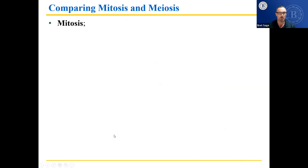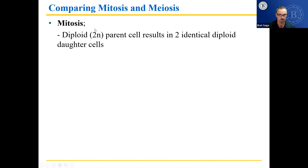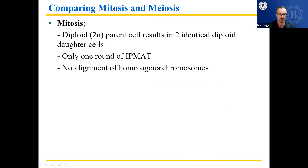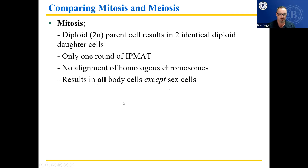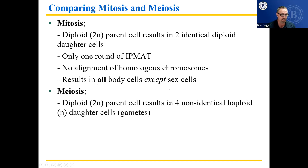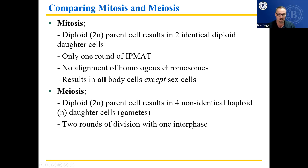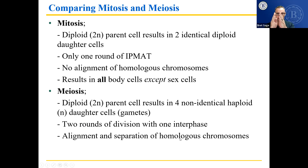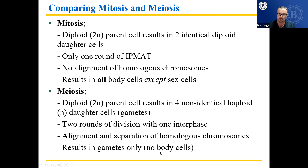Looking at the comparison notes: Mitosis — a diploid parent cell results in two identical diploid daughter cells. There's only one round of interphase, prophase, metaphase, anaphase, telophase. There's no alignment of homologous chromosomes in mitosis. It results in all body cells except sex cells. In meiosis, the same diploid parent cell makes four non-identical gametes. There are two rounds of division but with one interphase at the beginning. There is alignment and separation of homologous chromosomes. It results in gametes only — no body cells.